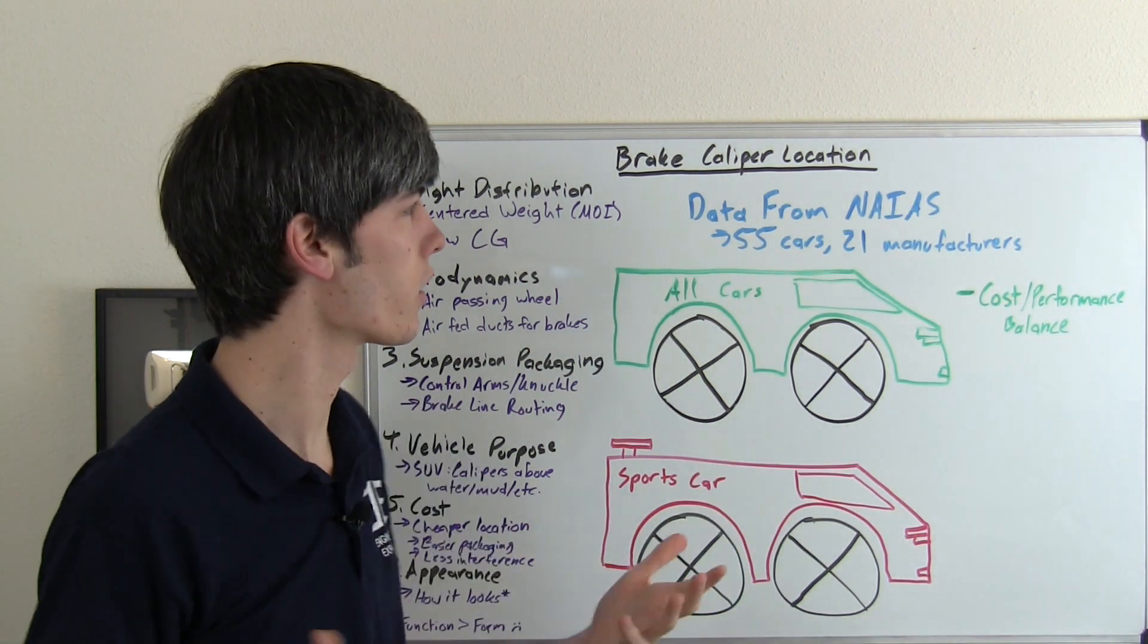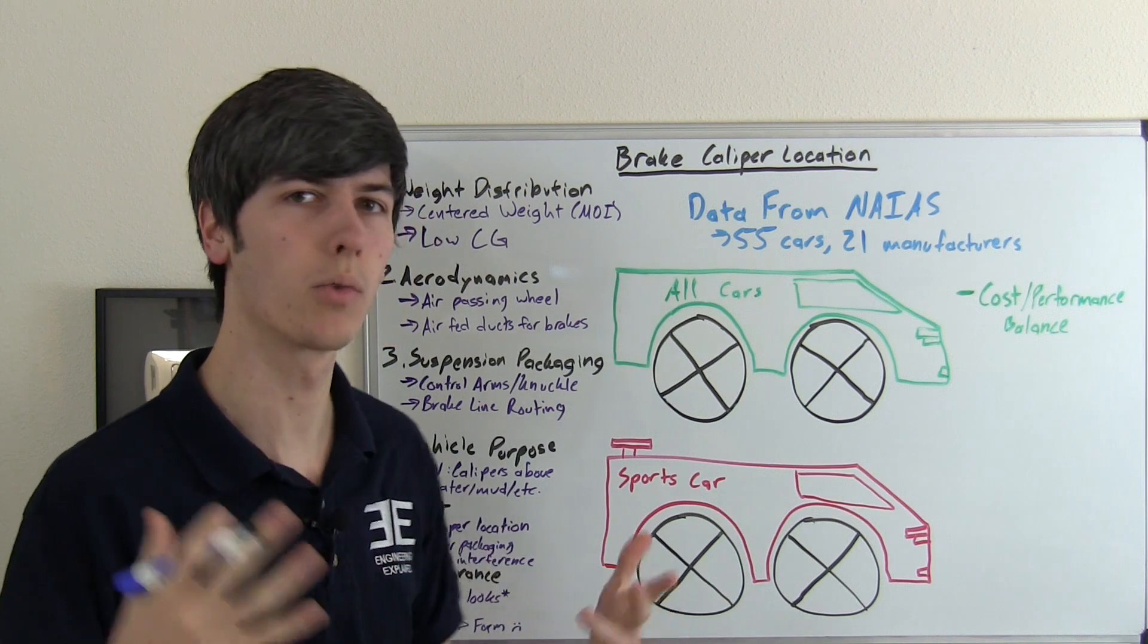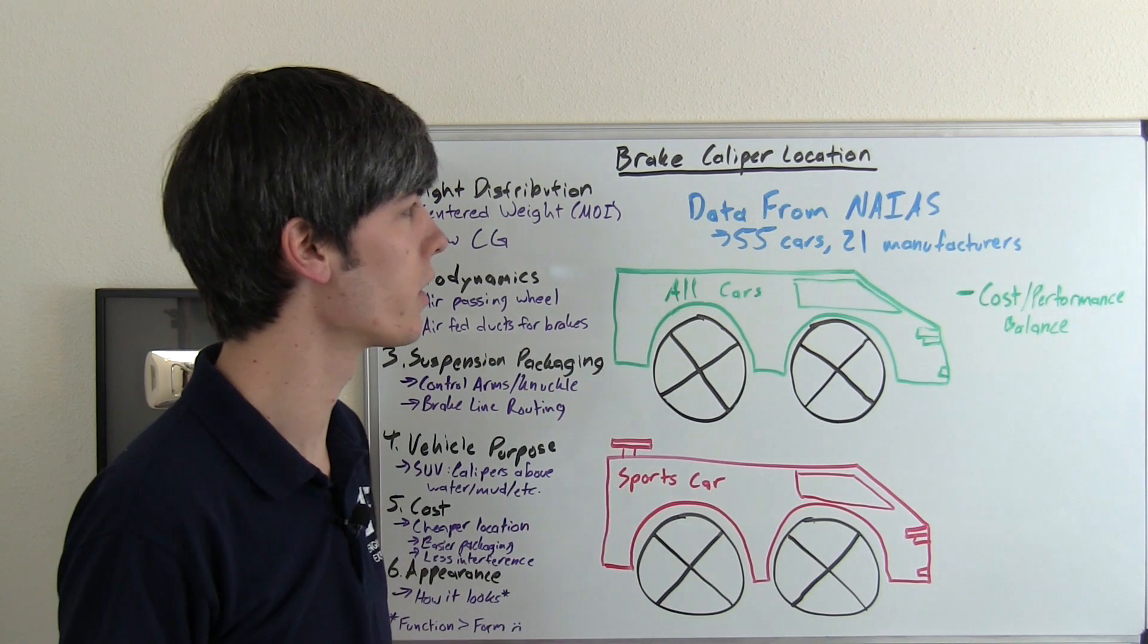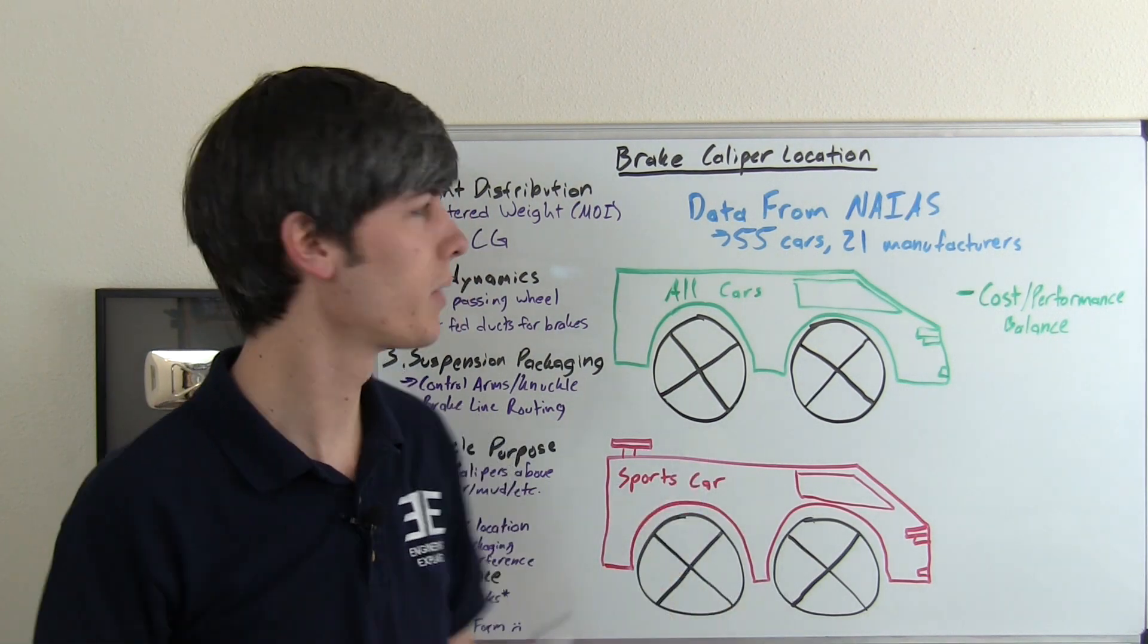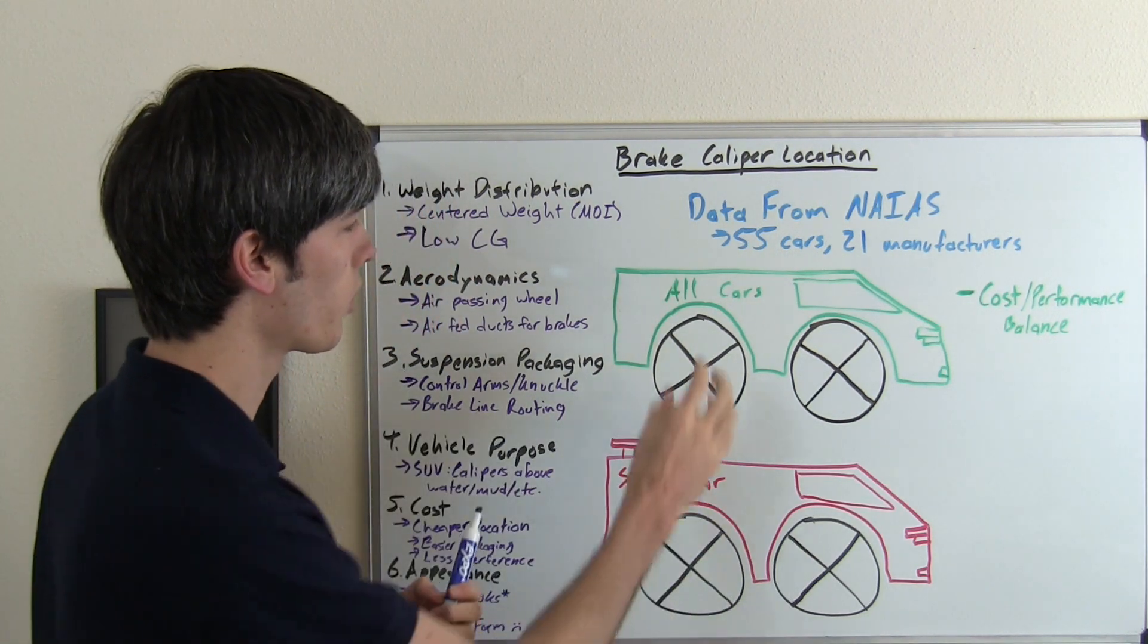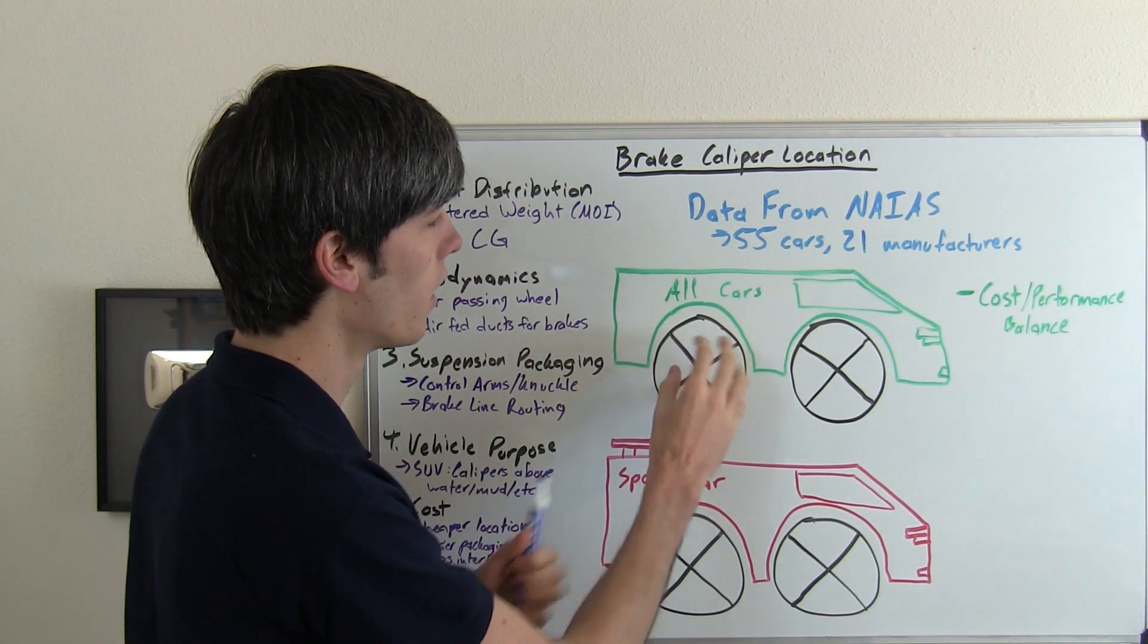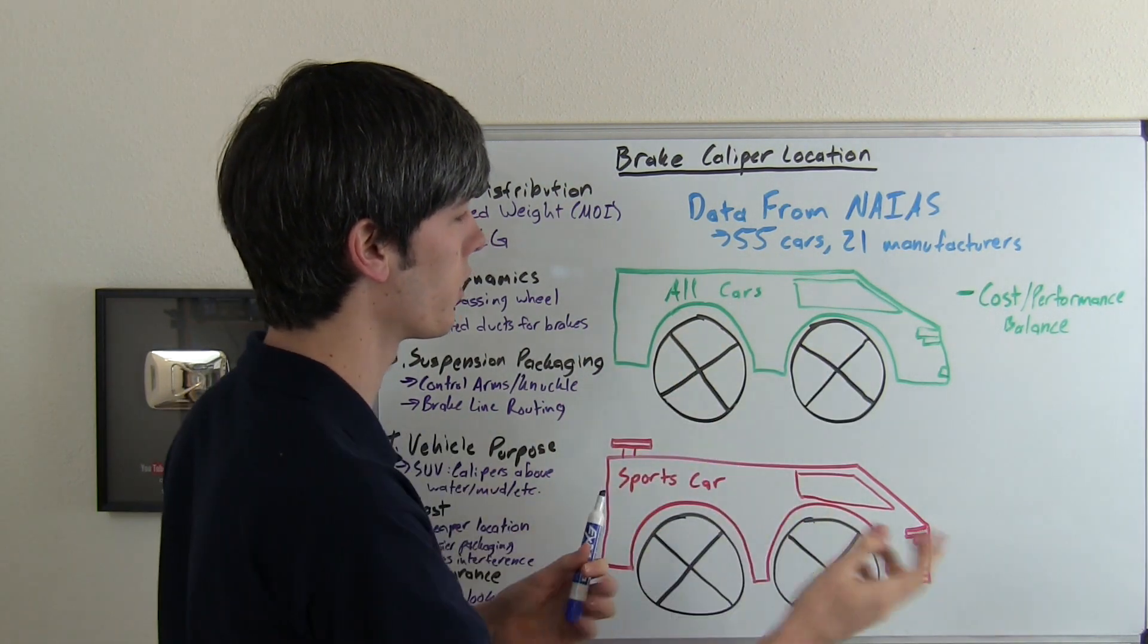So while I was at the Detroit Auto Show I was checking out different cars and seeing where they placed these brake calipers and I looked at 55 different cars across 21 different manufacturers and took some data on where they place these calipers. So what we've got going on here is the different locations. This will be the rear tire on the right side and this will be the front tire on the right side.